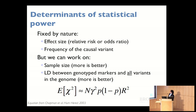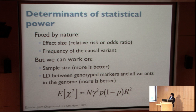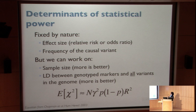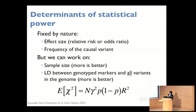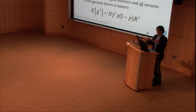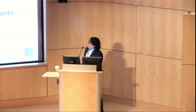What are the determinants of statistical power to make a discovery? There are parameters fixed by nature and some we can work on. Fixed by nature: the effect size — how strongly does an allele increase the likelihood of developing the disease, expressed as a beta coefficient, relative risk, or odds ratio. Also fixed: the frequency of the causal variant. There's a whole debate about whether it's all common variance, all rare variance, or a mixture — probably a mixture of many things.